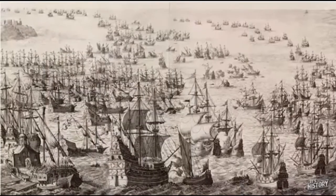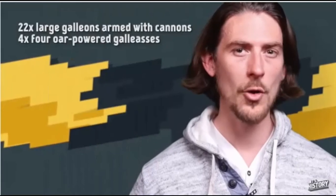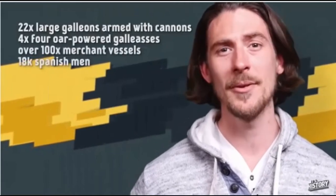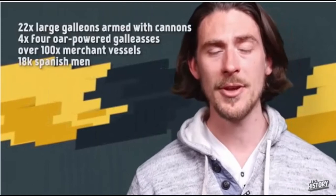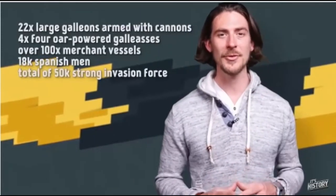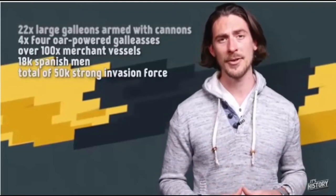The transitional nature of naval warfare was reflected in the makeup of the fleets. The core of the Catholic fleet consisted of 22 large galleons armed with cannon but mostly designed for transport, plus four oar-powered galleasses, supported by over 100 armed merchant vessels. A total of 18,000 men were on board. Combined with the army in Flanders, this would have amounted to an invasion force of over 50,000 men.